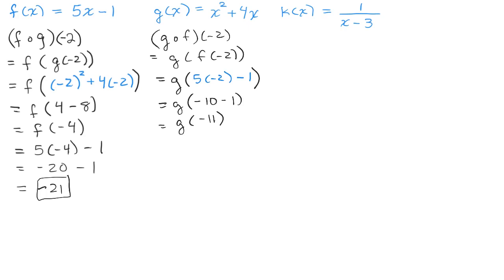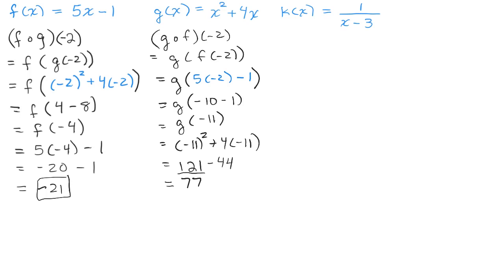Now I do g of negative 11, replacing x in the g function with negative 11. That gives negative 11 squared plus 4 times negative 11, which is 121 plus negative 44, since negative 11 times negative 11 is positive 121 and 4 times negative 11 is minus 44. The answer is 77. You can see it makes a difference which function you do first.